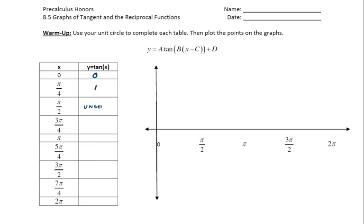Tangent of pi over four would be one. You can verify these by looking at the coordinates on the unit circle and doing the y-coordinate over the x-coordinate. Tangent of pi over two is undefined — it does not exist — and we'll take a look at what that means on our graph.